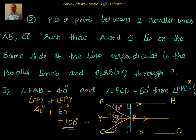Angle APY is 40 degrees and angle CPY is 60 degrees by alternate interior angles. So angle APC equals 40 plus 60, which equals 100 degrees.